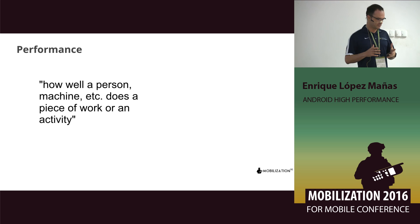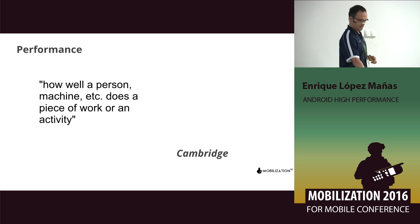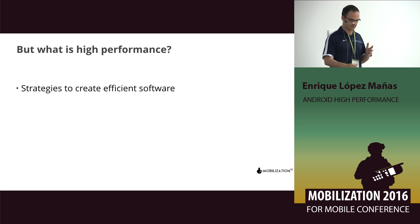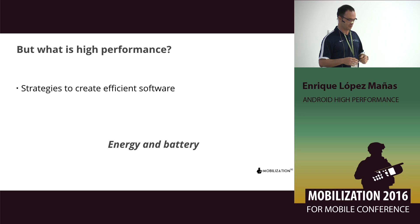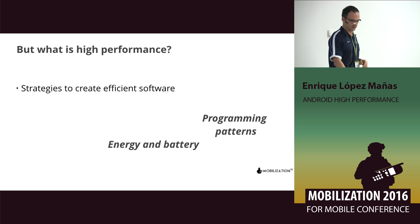What is performance? Performance is defined as how well a person, a machine, does a piece of work or an activity — that's the Cambridge Dictionary definition. When we talk about high performance software, we're talking about strategies to create efficient software: software that is trying to get the last millisecond, software that is using memory wisely. And particularly when we talk about devices, we want to know about energy and battery consumption. It's also about programming patterns — we want to make software that lasts, not software that needs to be rewritten every year because we didn't use the right paradigms.